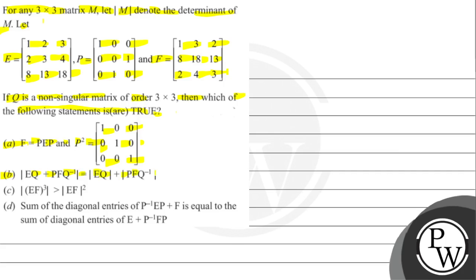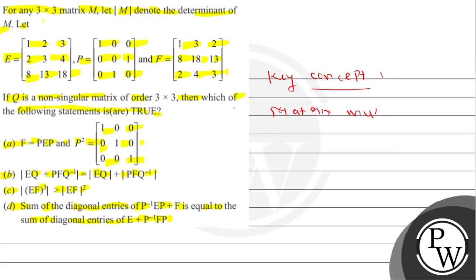We will use the concept that the sum of diagonal entries of P-inverse times T times P plus F times P is equal to the sum of diagonal entries of T plus P-inverse F P. We will also use matrix multiplication, and the property that determinant of A times B equals determinant of A times determinant of B.